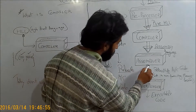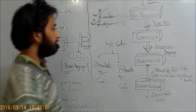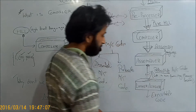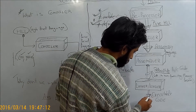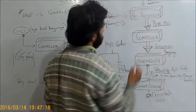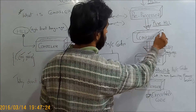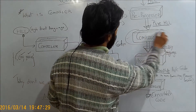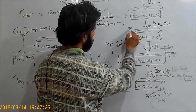After that, the relocatable machine code is given to the linker and loader. The linker and loader take that relocatable machine code as input and produce executable code. So in the final stage we get executable code. All these are the software modules which work along with the compiler, and now we will go into the detail of the compiler itself.